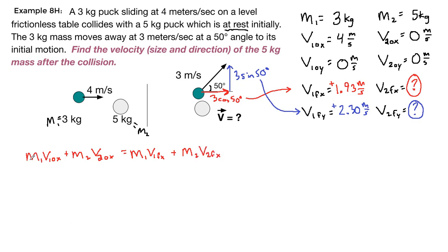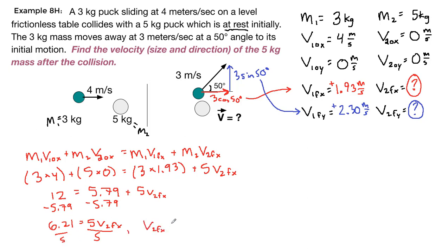For the x direction, we're just looking at our nice list. We have 3 times 4, and 5 times 0 at the beginning. At the end, we have 3 times 1.93, and 5 times our unknown v2 final x. So we have 12 equals 5.79 plus 5v2fx. We can subtract this from both sides, and we get 6.21 equals 5v2fx. We divide by 5, and so we get that the x component is 1.24 meters per second.